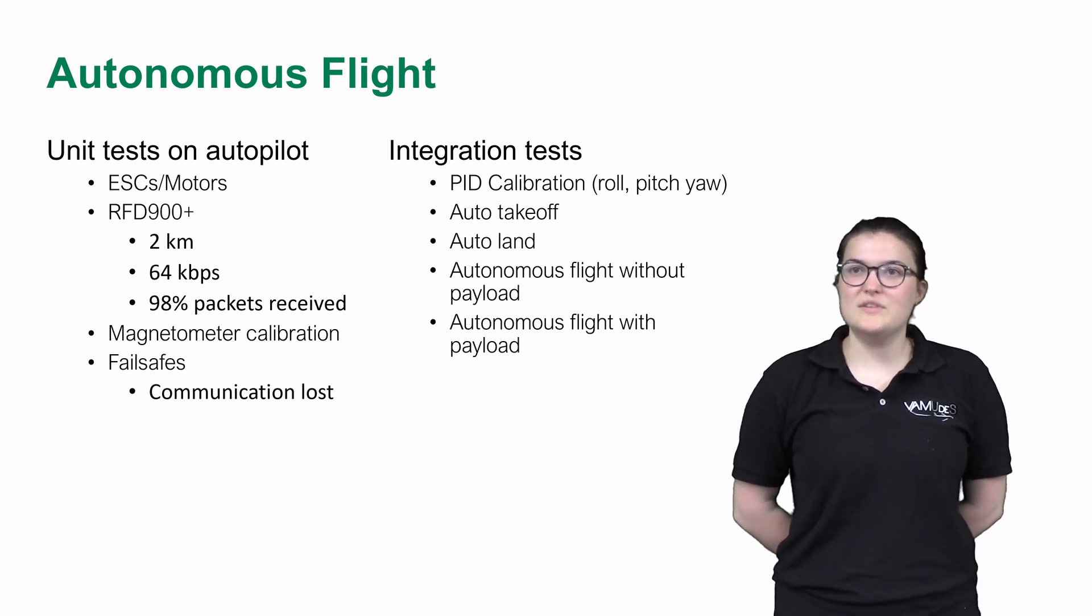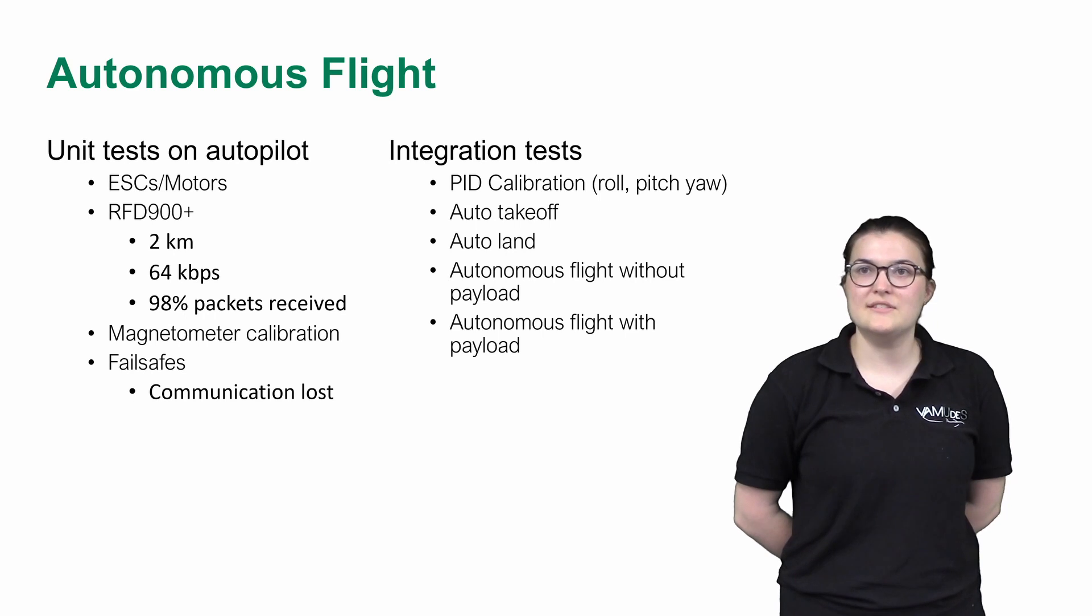For the autonomous flight, we started by doing unit tests on the autopilot to see if every system is functioning separately before the competition. We did motor tests on a test bench to calibrate them. The GCS antenna was tested at a range of two kilometers at a speed of 64 kilobytes per second and had a result of 98% of the packet received. The compass was then calibrated.